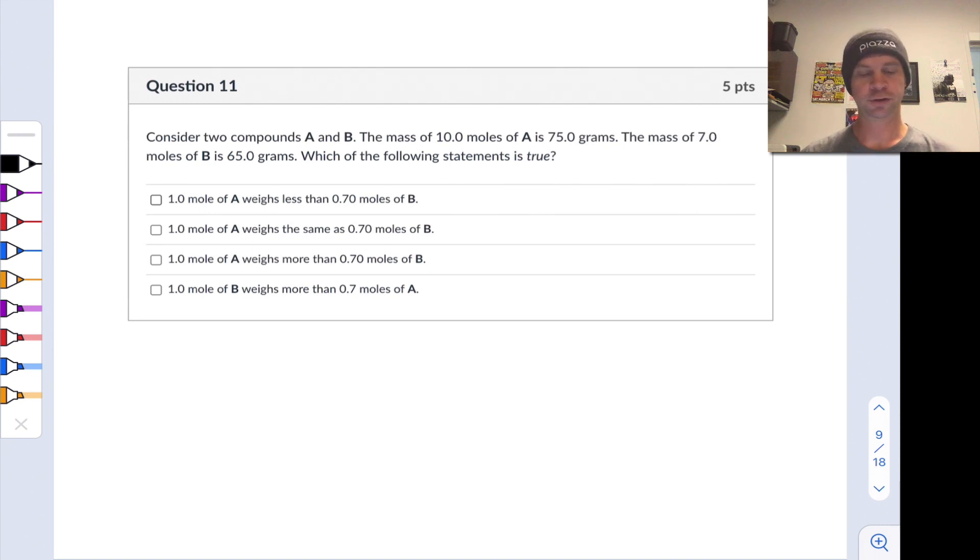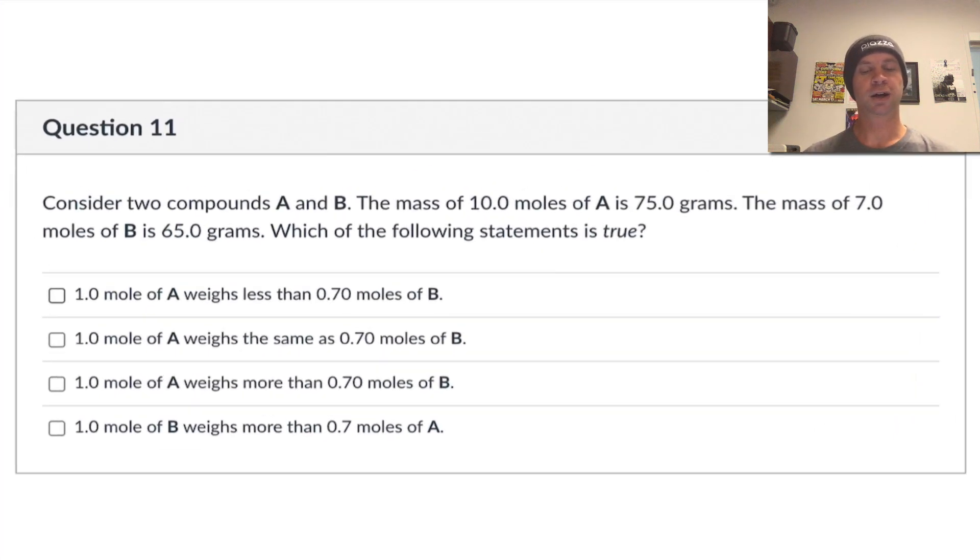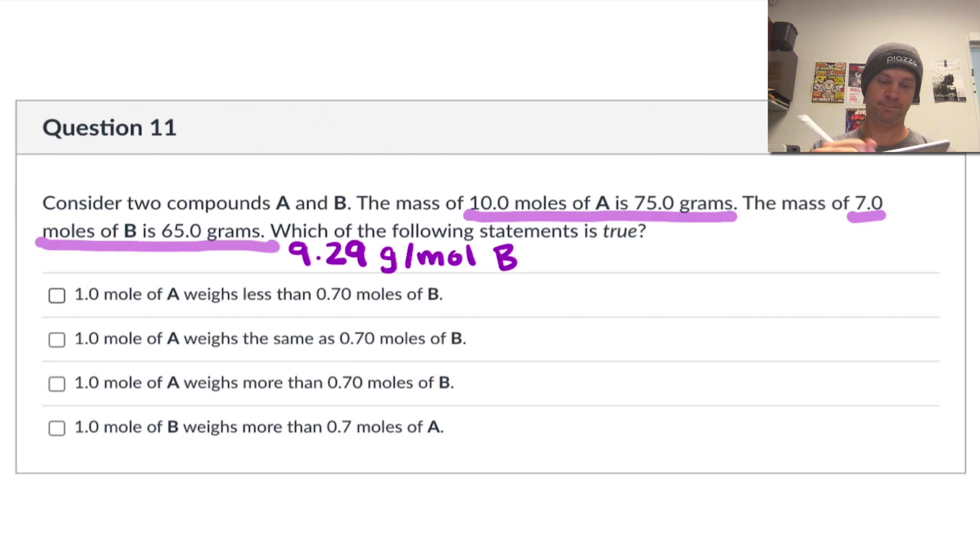Finally, here we have a question, a conceptual question, really, about two compounds, A and B. We're given that the mass of 10 moles of A is 75 grams. This actually tells us something about the molar mass, right? That the mass of a mole of A is 7.5 grams. The mass of seven moles of B is 65 grams, and I'm actually gonna calculate out really quickly what molar mass is implied by that, 9.29 grams per mole. So let's write that out. This is 9.29 grams per mole for B, and this is 7.5 grams per mole for A.